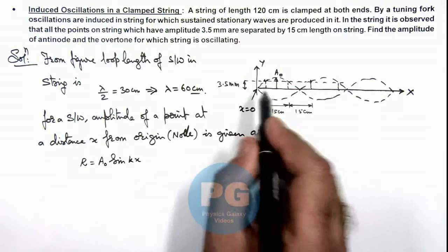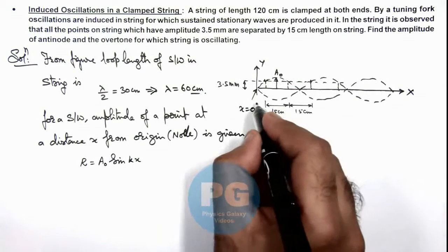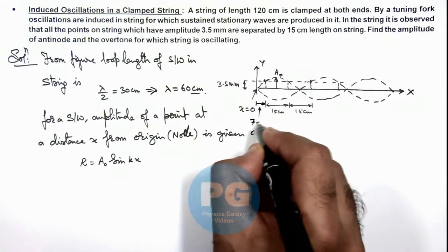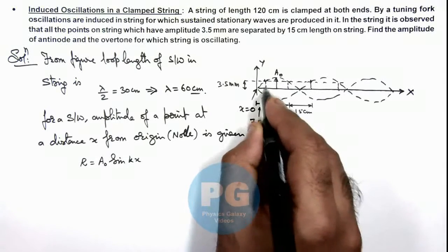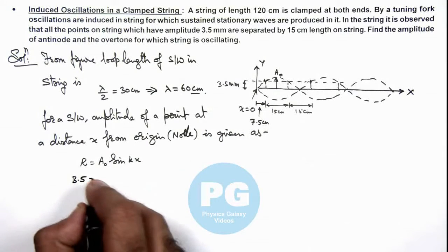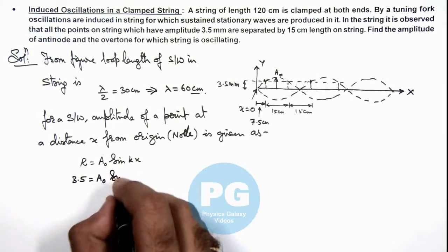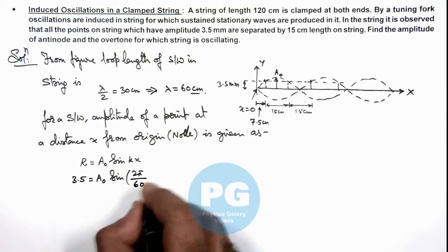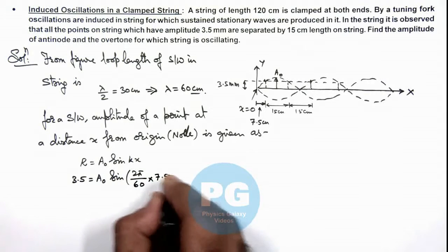And in this situation, at a distance which is 7.5 centimeters from origin, the amplitude is 3.5 mm, so we can write 3.5 = A₀ sin(2π/λ × x), where λ is 60 and x is 7.5.